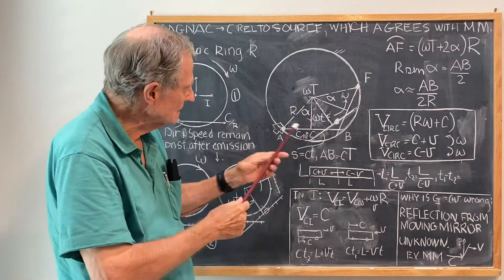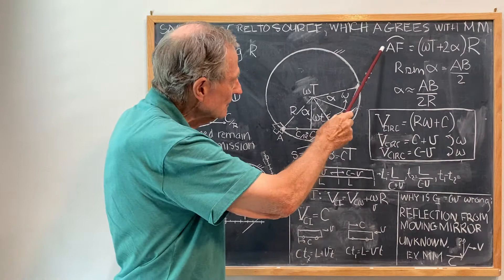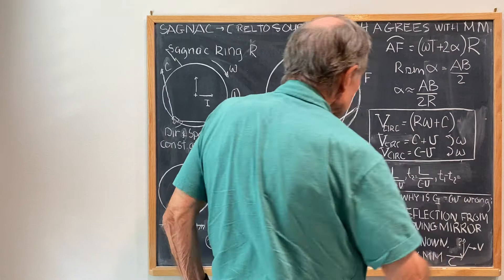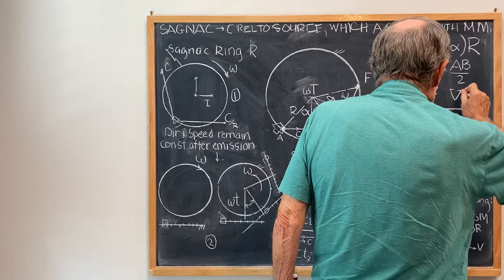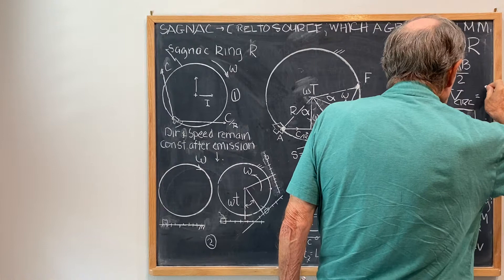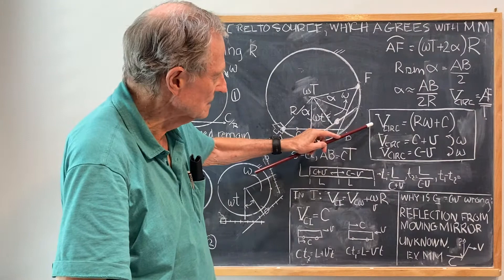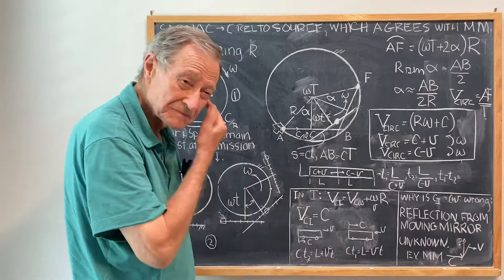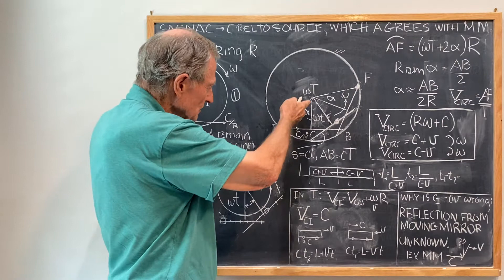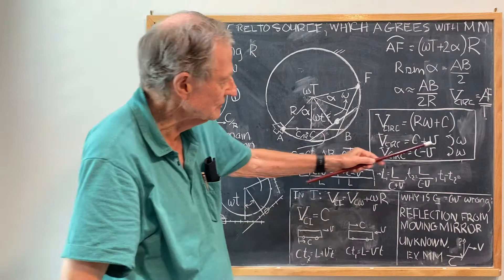you get that AF over T, AF divided by this, the circumferential velocity is this distance divided by the time it takes to go that distance. So V circumferential is equal to AF over cap T. So if you do that calculation, then you get the circumferential velocity is R omega plus C. And R omega, of course, is the circumferential velocity V due to the rotation of this line about angular velocity omega.